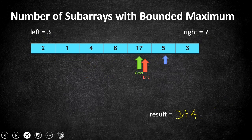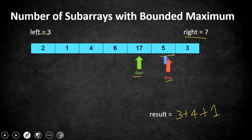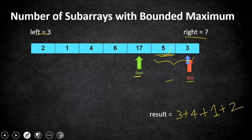Next element is 5, which is within the limit 3 and 7. We found a new satisfying subarray, so we move end to 5. The difference start minus end is 1, meaning 5 alone forms one subarray. We add 1 to result. Moving to the next element 3, which is the left value and also satisfies the condition. We move end to 3; the difference is 2. This means 5,3 forms one subarray with maximum 5 and 3 alone forms another — we add 2 to result. The overall result is 10.